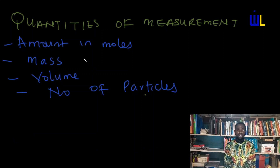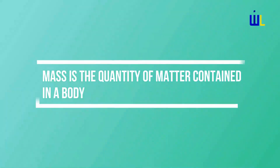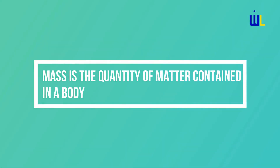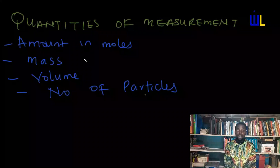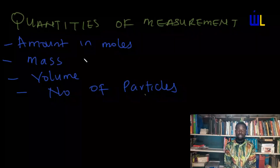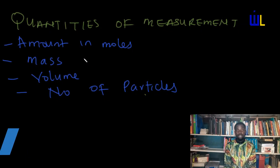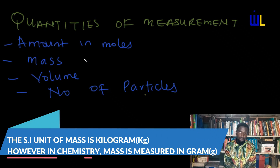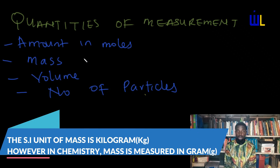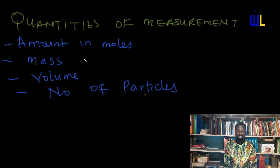We go to the next concept, which is mass. Mass is simply the quantity of matter contained in a body. So when you are looking at the quantity of matter, you are actually considering the mass. The SI unit of mass is kilogram. However, in chemistry we are going to be measuring mass in grams because the particles we are dealing with are actually very small.